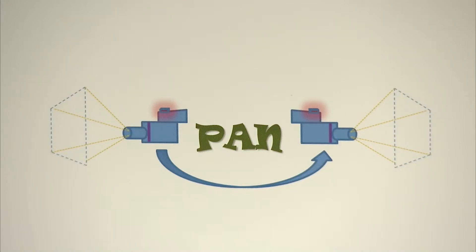There are six terms to learn. The first term is pan. When you pan the camera, you smoothly point it to the right, or you can pan the camera to the left.